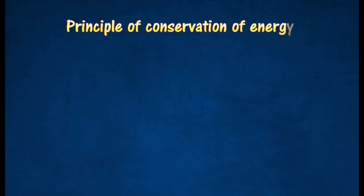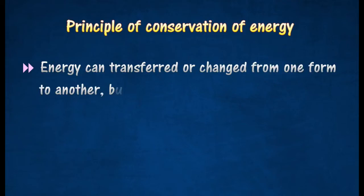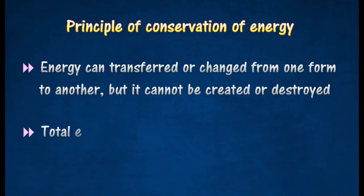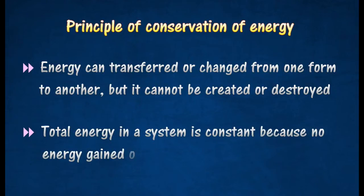The principle of conservation of energy states that energy can neither be created nor destroyed, but can be converted from one form to another. This principle implies that the total amount of energy in a closed system remains constant.